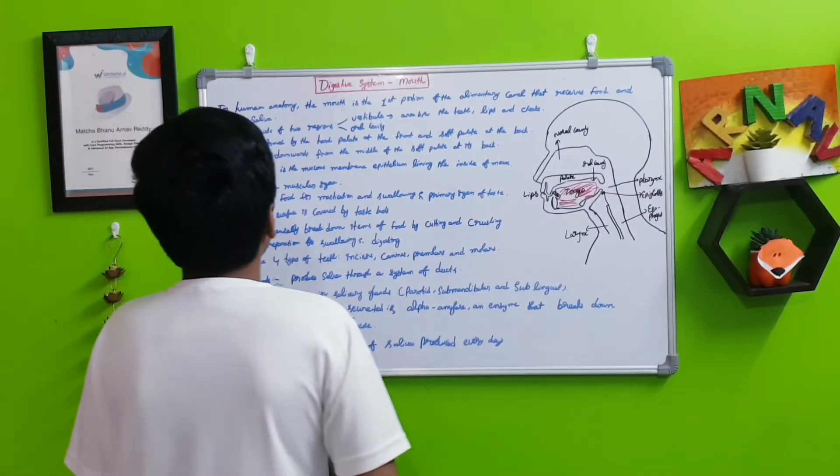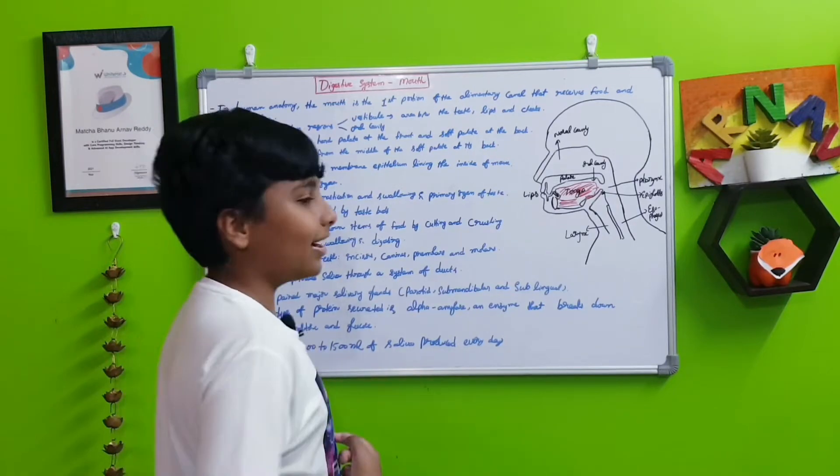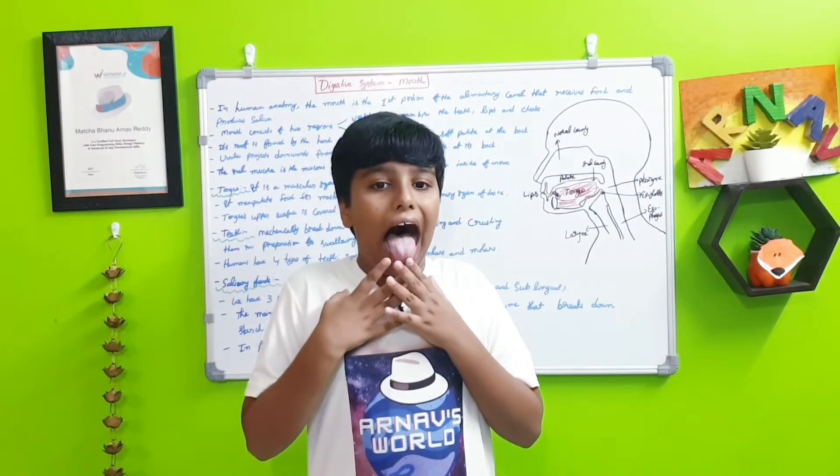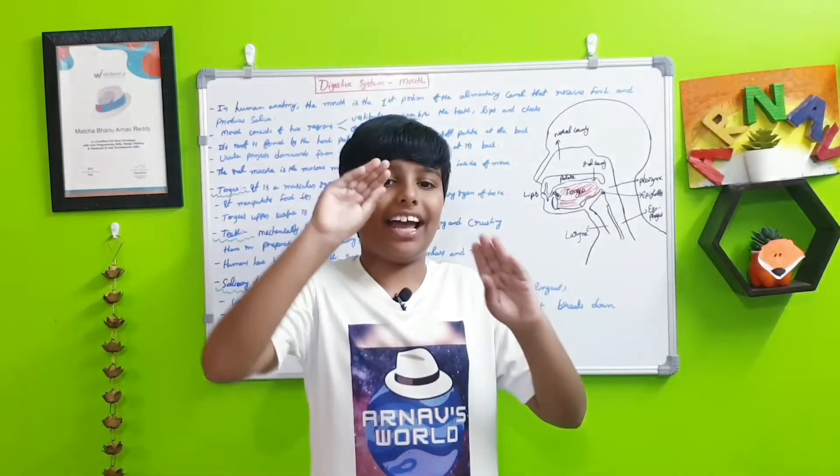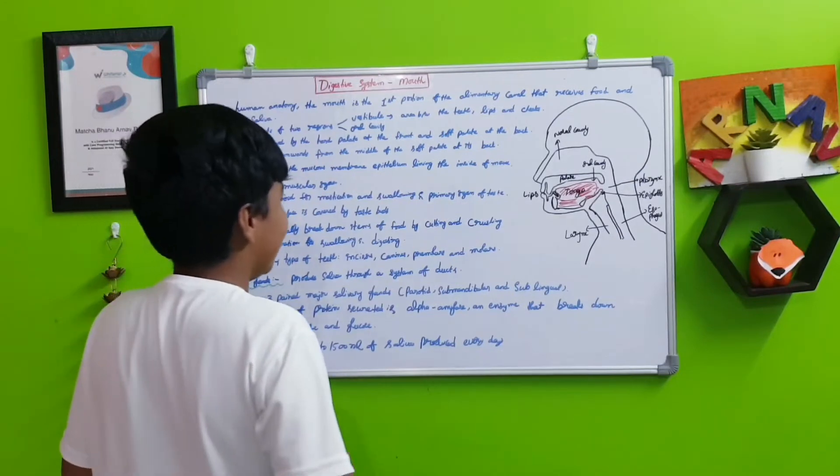The uvula projects downwards from the middle of the soft palate at its back. When you open your mouth very much, you may see something just hanging out there. That is known as the uvula.